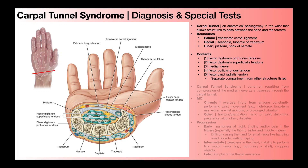Before we go any further, let's look at some of the important relevant anatomy as it pertains to the carpal tunnel. Right here where I'm circling with my mouse, this is the carpal tunnel. There are several structures that run between the hand and the forearm and have to traverse through this tunnel. The carpal tunnel is an anatomical passageway on the palmar side of the wrist that allows structures to pass between the hand and the forearm, and vice versa.